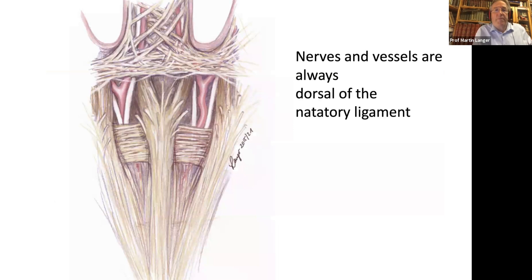What is very important clinically: the nerves and vessels are always dorsal to the natatory ligament. You never find an artery or nerve running over this structure. This is very important — there is no spiral cord or spiral nerve in this area. You are safe if you cut down to the natatory ligament and you will never cut a nerve.